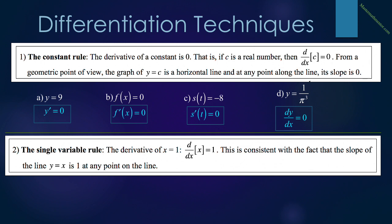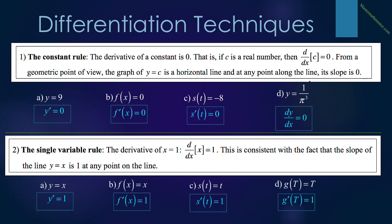Our next rule is called the single variable rule. It says that the derivative of x is equal to 1 — that is, the derivative with respect to x of x equals 1. This is consistent with the fact that the slope of the line y equals x is 1 at any point on the line. So in a, if y equals x, then y prime equals 1. In b, if f of x equals x, then f prime of x equals 1. In c, if s of t equals t, then s prime of t equals 1. In d, if g of T equals T, then g prime of T equals 1.